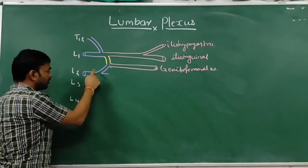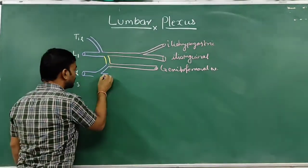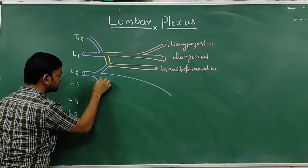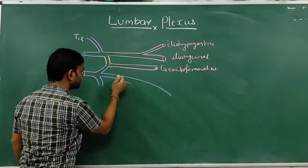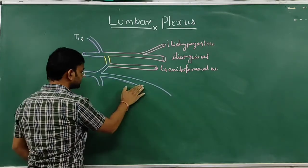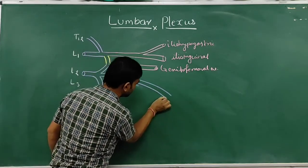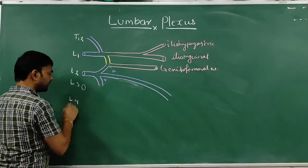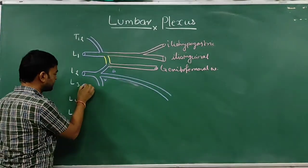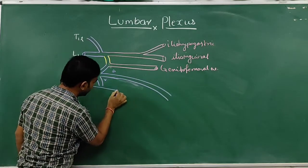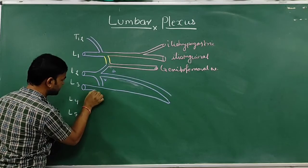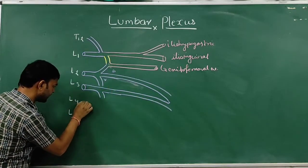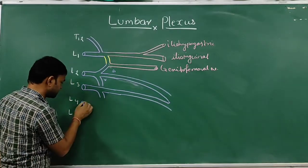L2 gives a dorsal division and a ventral division. L3 also gives a dorsal division and a ventral division. L4 gives a larger dorsal division and a smaller ventral division.